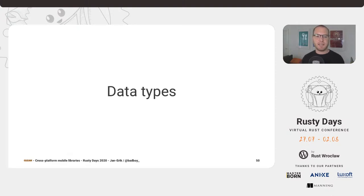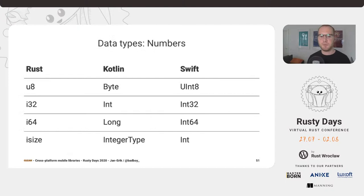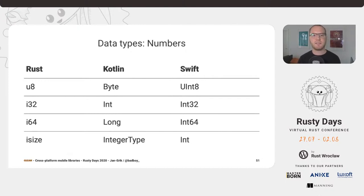Now I'd like to jump into some of the challenges we were facing when developing a cross-platform library. Not everything went smoothly and there were a lot of things we had to figure out. The very first thing — and that came up a lot already — is data types. The data types Rust knows, the data types expressed in C, and the data types available in all the other languages we're targeting are very different, so we always need to convert between those. The first ones to look at are numbers — these are actually pretty simple. Number types in Rust all have their bit width defined, and there are equivalents in both Kotlin, Swift, and the other languages. A little bit of care needs to be taken for `isize` and `usize`, which are platform-defined size types.